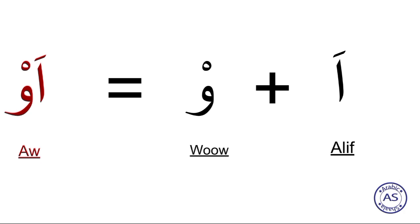Diphthongs mein humare two main rules hote hain. Number one: the first letter can be any letter from the 28 Arabic alphabets. Diphthongs happens with two letters — either with letter Waw or with letter Ya. These two letters, Waw and Ya, are the diphthong letters. The first letter can be any of the 28 alphabets. Rule number three: the first letter will have vowel sign Fatha, and the second letter — Waw or Ya — will have vowel sign Sukoon.